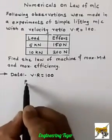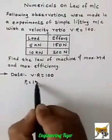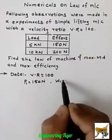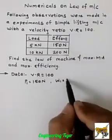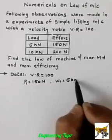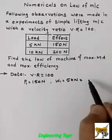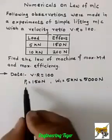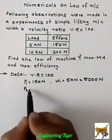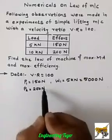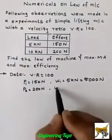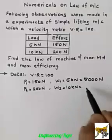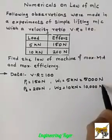Now the efforts required with corresponding loads are given. First, P1 is given as 150 N with corresponding W1 equal to 5 kN, which is 5000 N. Similarly, P2 is given as 200 N when the load is 10 kN, equal to 10,000 N.